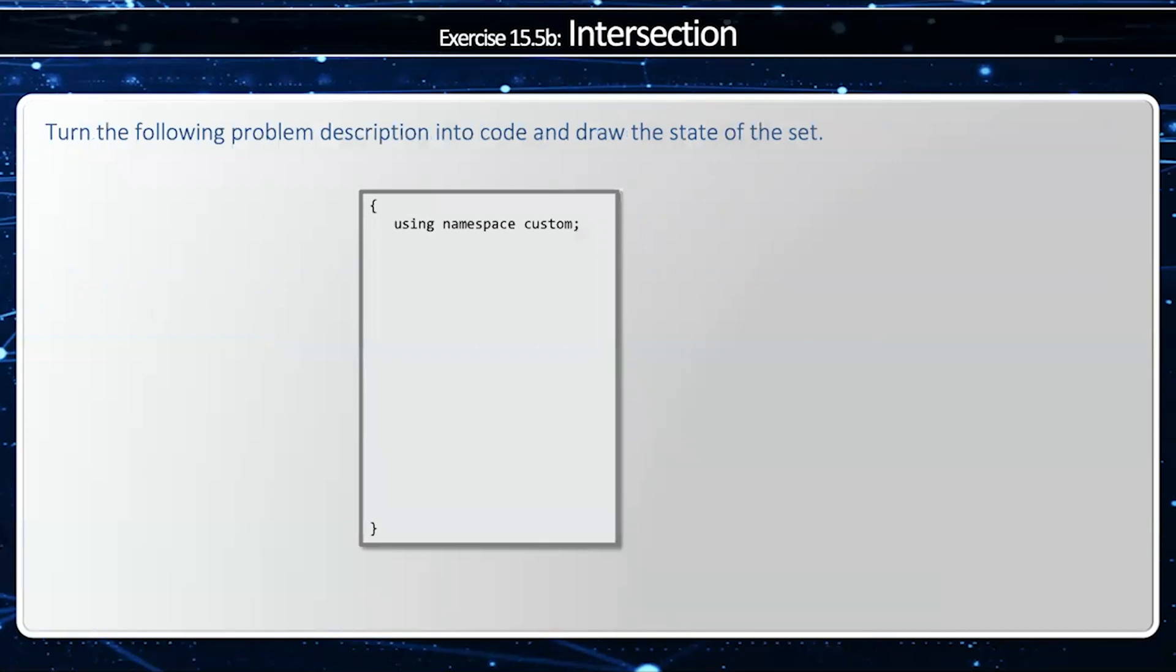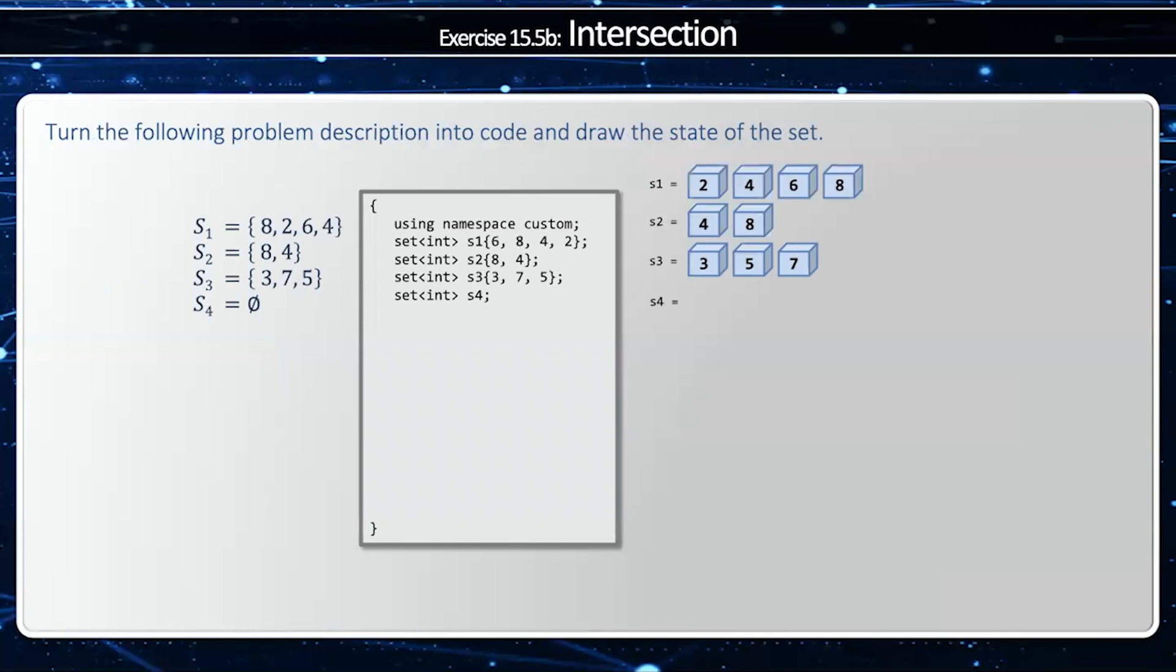And so I'm going to once again demonstrate this with the same S1, S2, S3, and S4 I had before. And so when I say S1 intersection S2, what do they both have in common? Well, they both have in common 4 and 8. Notice how I use the and operator for intersection.